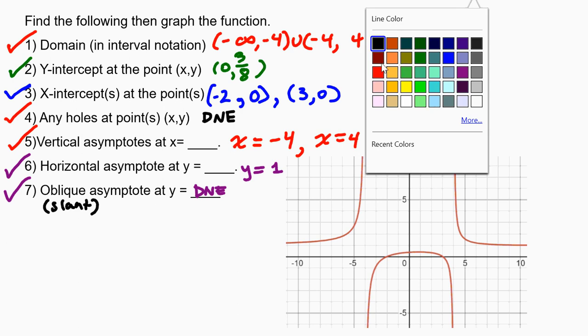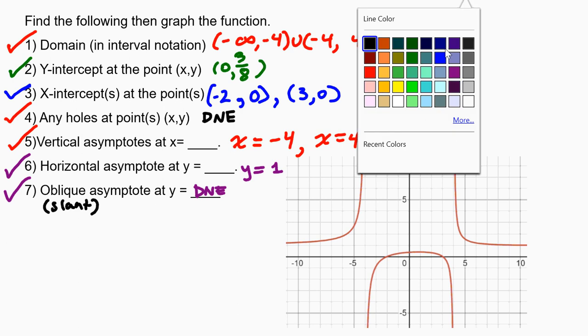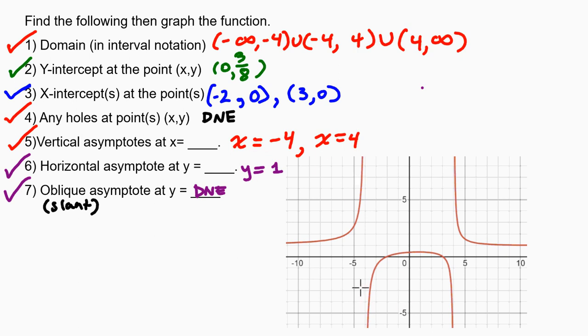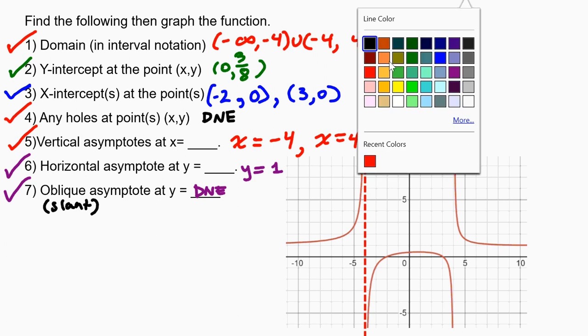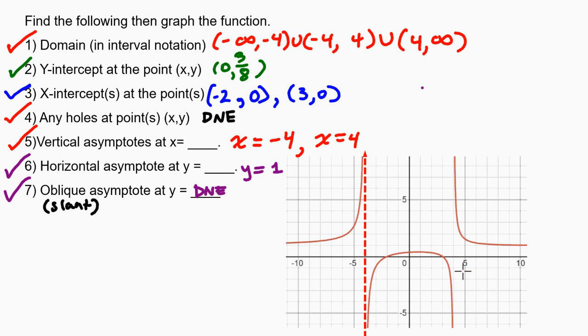So, there should be vertical asymptotes at x equals negative 4 and x equals positive 4. So, here is where 4 is on my x axis. And notice that, if I draw a vertical line, that surely does look like the electric fence that is bounding the function in this region. You see how the graphed function is avoiding that vertical line. And then, also, we see it for x equals positive 4 as well.